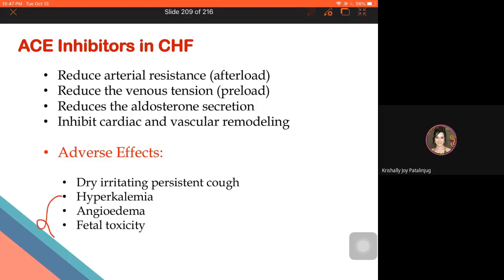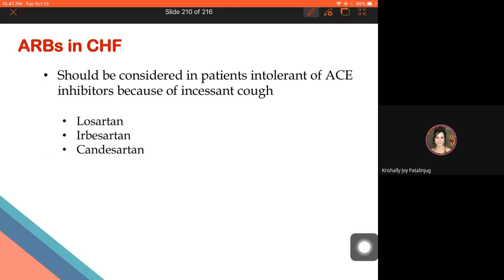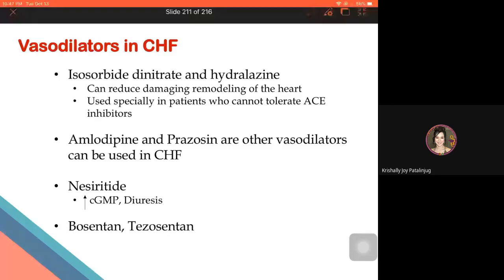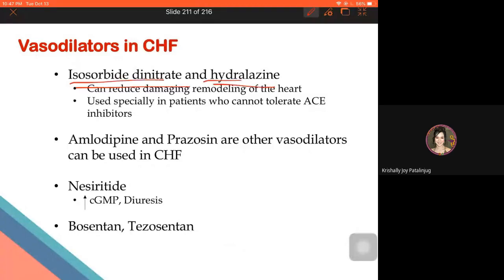For ARBs, examples used for heart failure management include losartan, irbesartan, and candesartan. For vasodilators: the combination of isosorbide dinitrate (ISDN) and hydralazine is beneficial among African-American patients and is clinically effective for heart failure management in Black Americans.